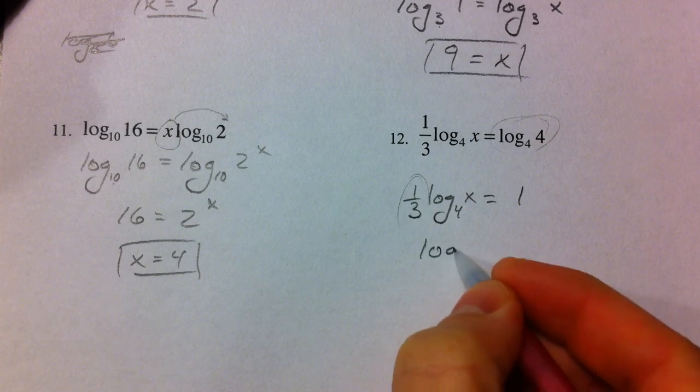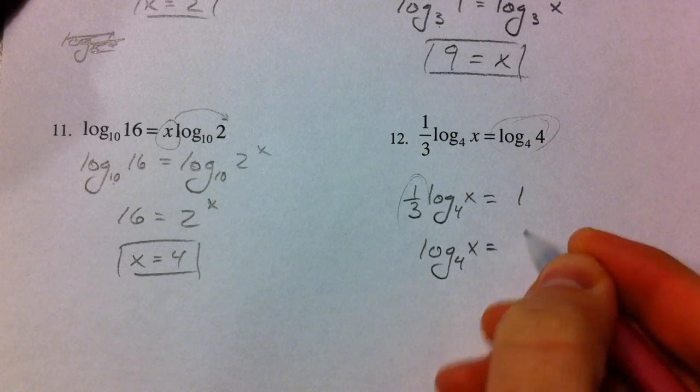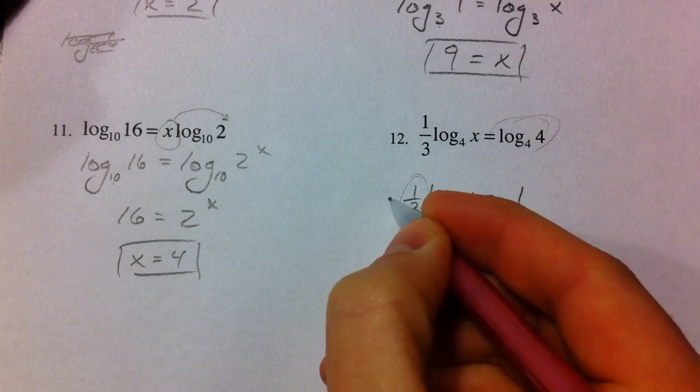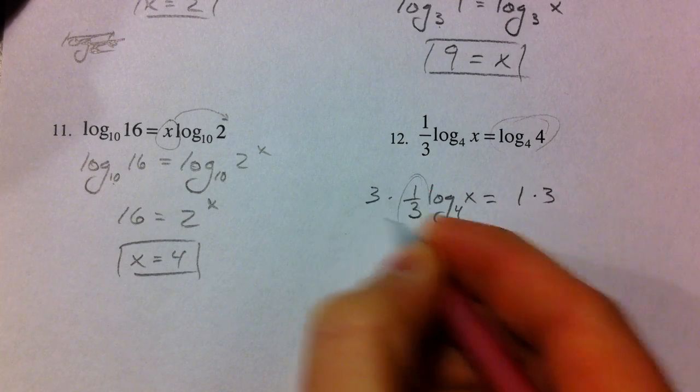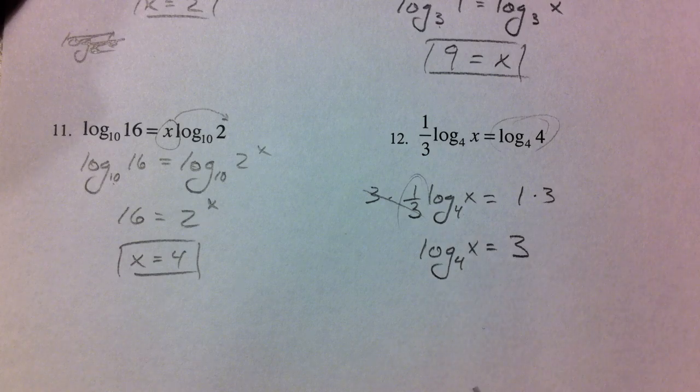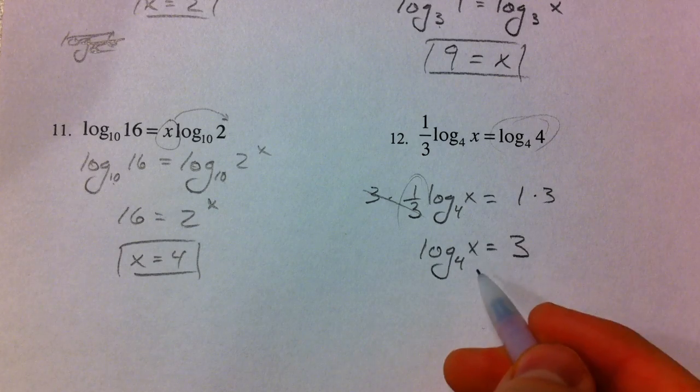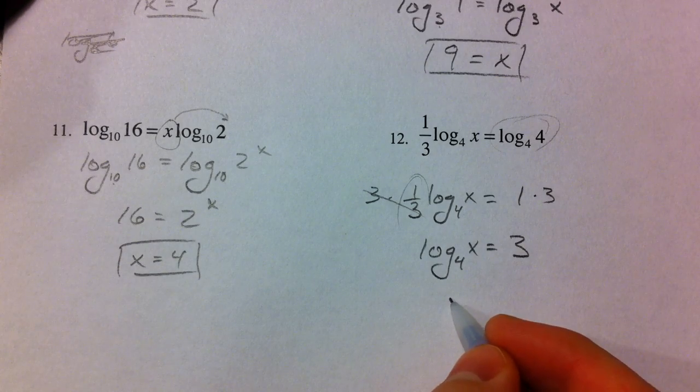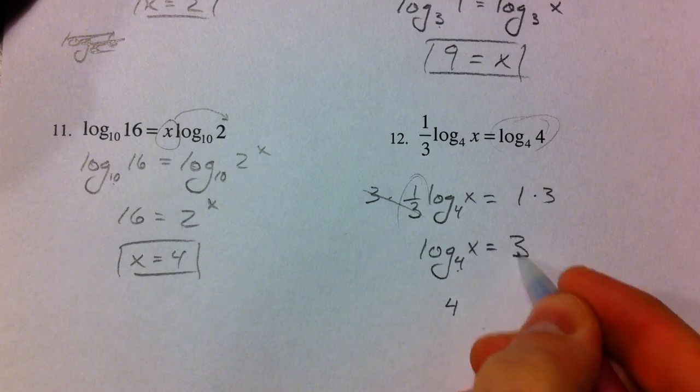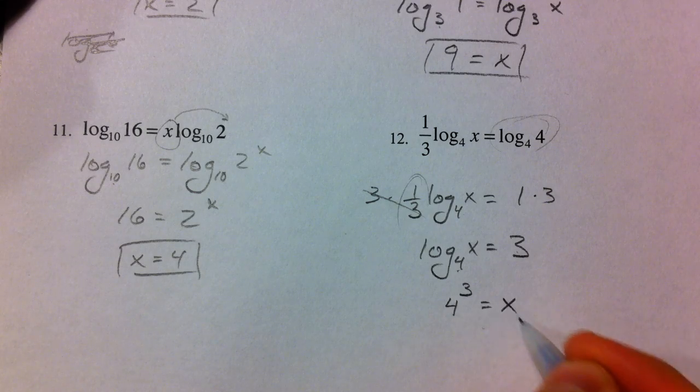So log base 4 of x equals 3 times 3, which is 3. And then convert it to exponential form. 4 to the 3rd power equals x.